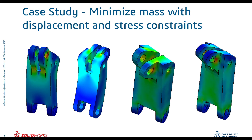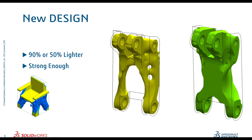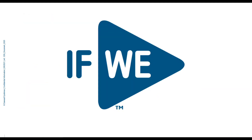I'll take the chair as the first case study, right now, to minimize mass with respect to displacement and stress constraints. Once we deal with this particular study, we're going to keep it 90 percent or 50 percent lighter with respect to mass constraints, and the strength will be sufficient to withstand the applied loads.